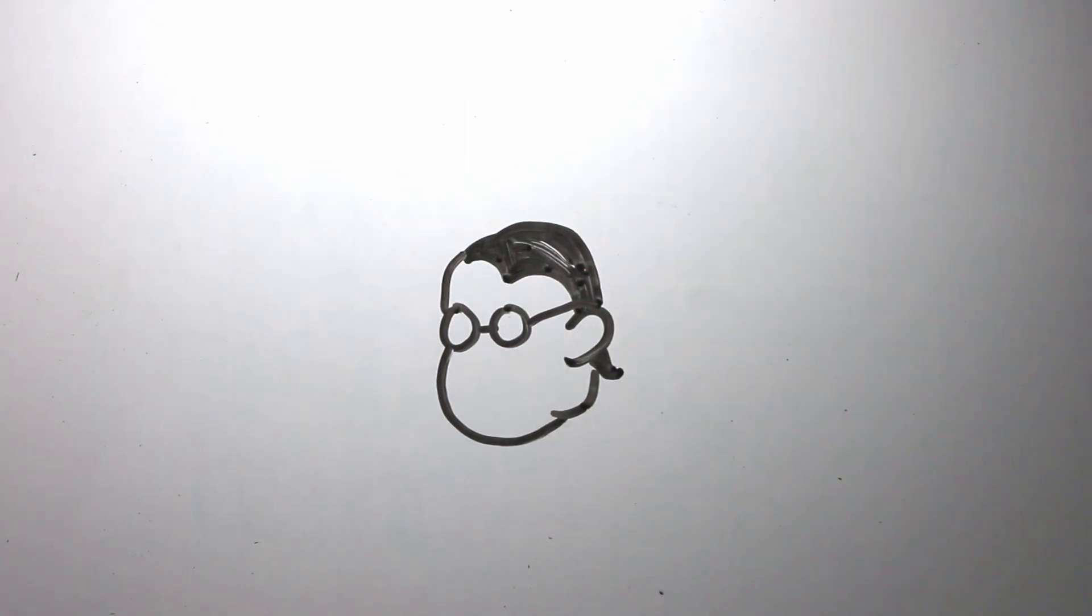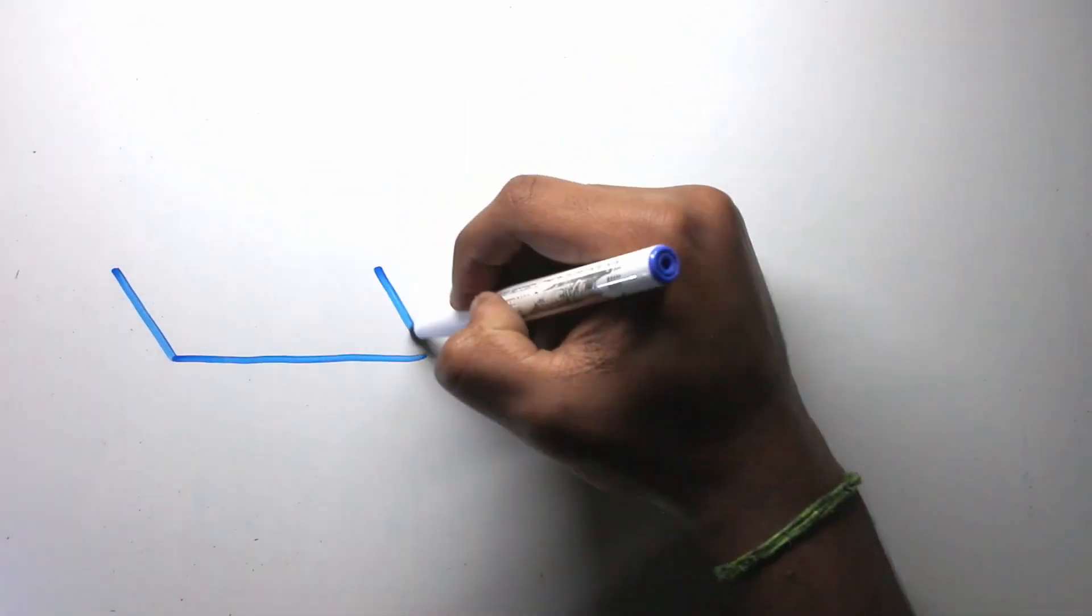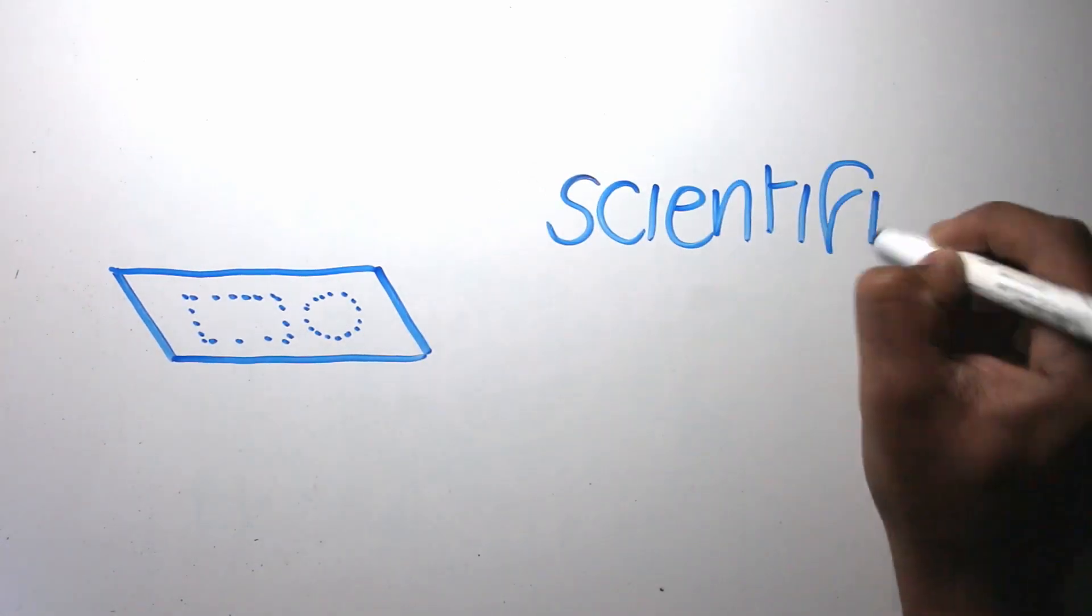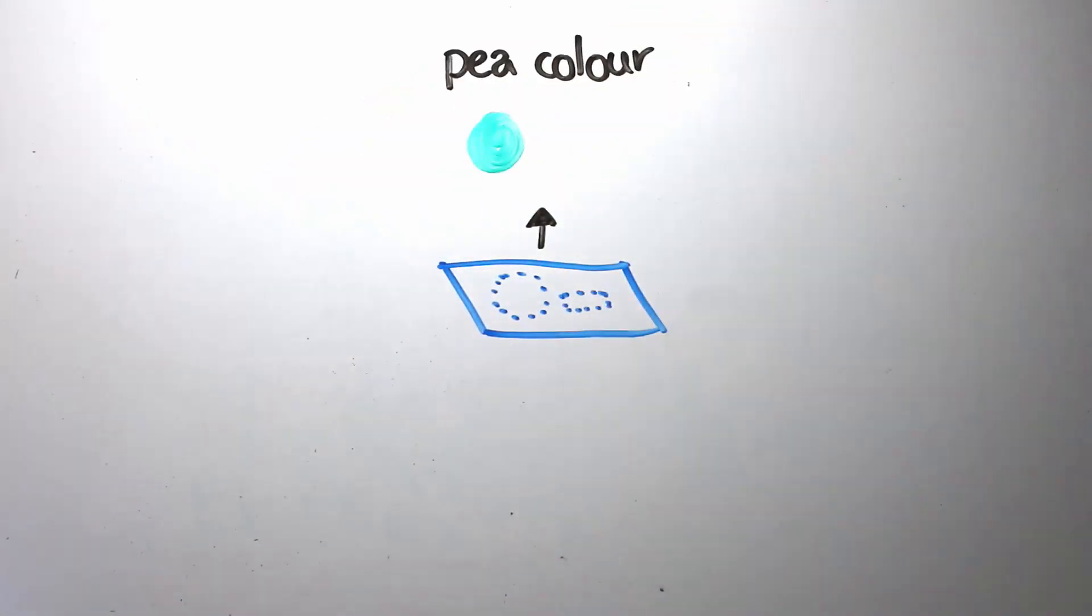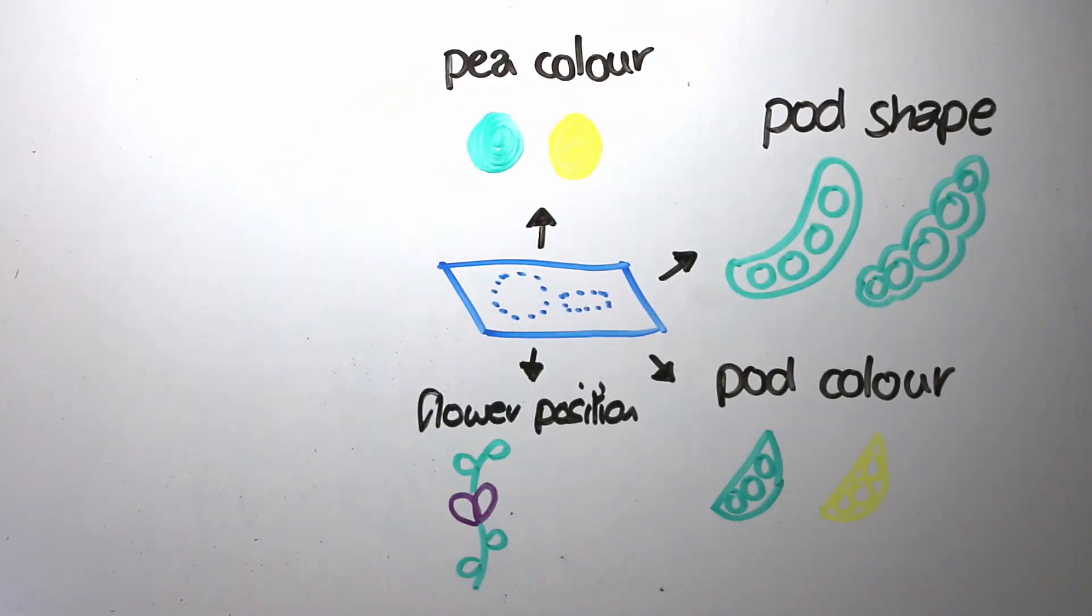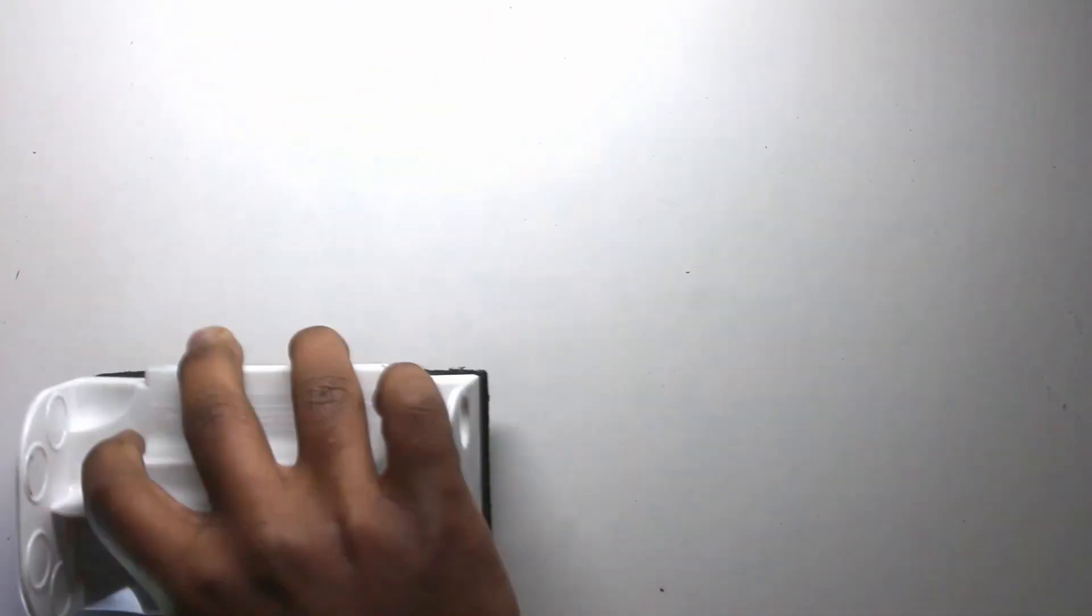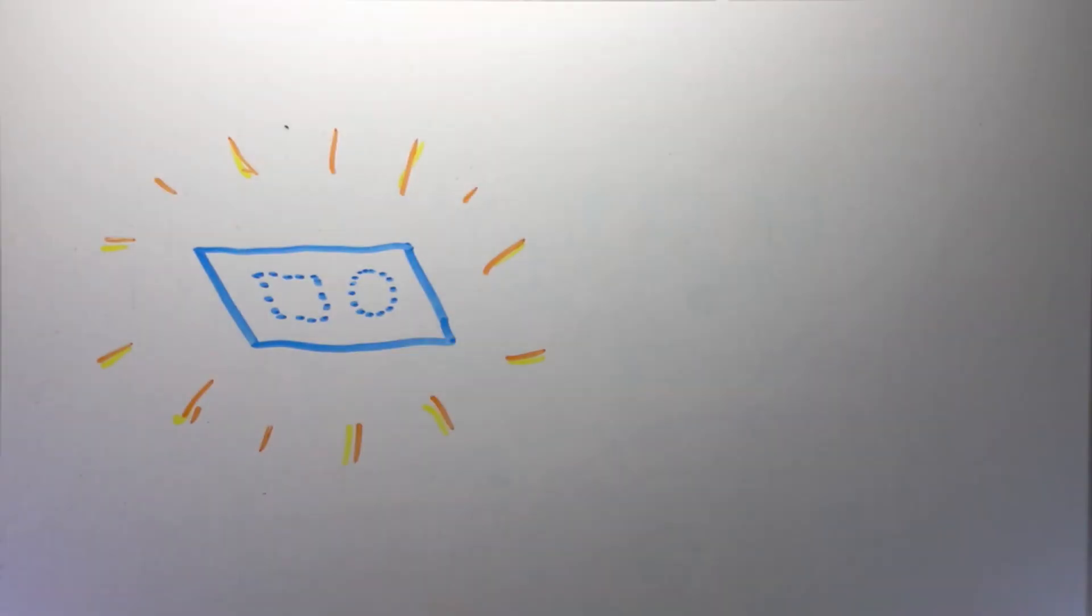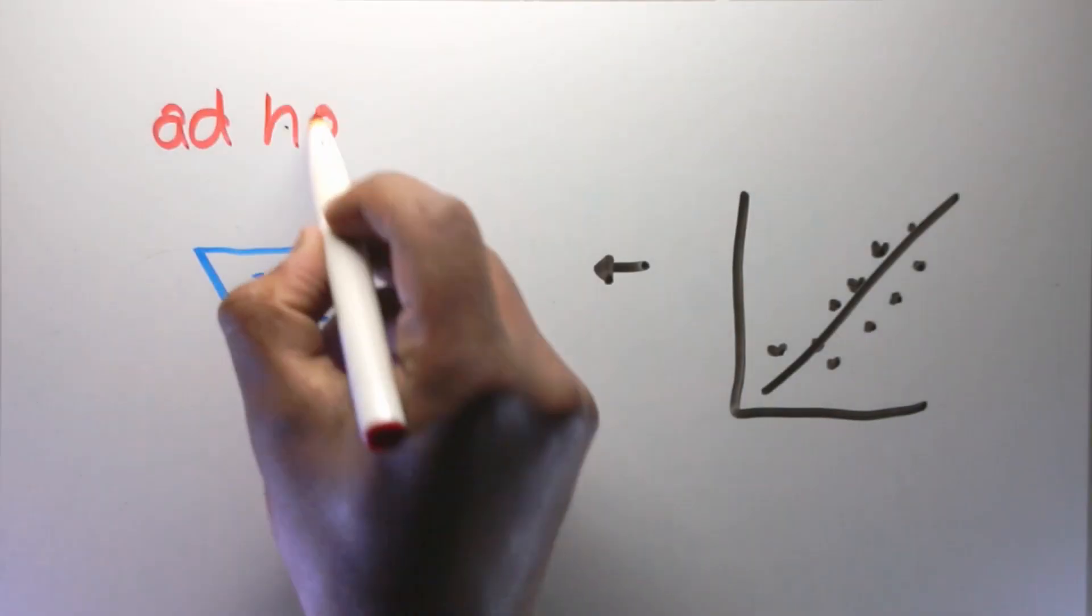But wait a second, how did Mendel know about these particles? He could neither see them, nor prove that they existed. All Mendel had was a scientific model, a theory that could explain the data that he got from his experiment. He tested his model not just with smooth and wrinkled peas, but with six other traits. For every trait that he tested with, he got ratios that were around three to one. But this wasn't enough, because although his model was very good, that was only because he made it to fit the data, an ad hoc explanation.